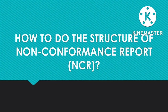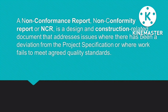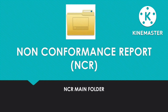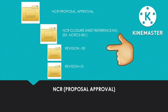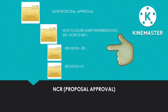How to do the structure of non-conformance report, or NCR. A non-conformance report or NCR is a design and construction related document that addresses issues where there has been a deviation from the project specification, or where work has failed to meet the agreed quality standards. As you will see on the screen, we have the main folder called non-conformance report, or NCR. When you open this on your system server, you will have a main folder called NCR. Next, when you open this NCR folder, you will make a new subfolder where you put the NCR reference number and the subject of that NCR.